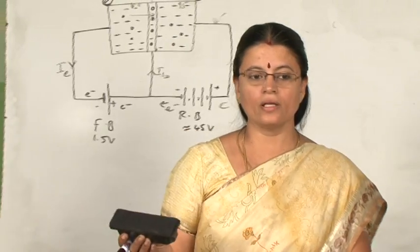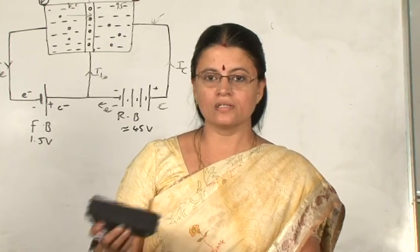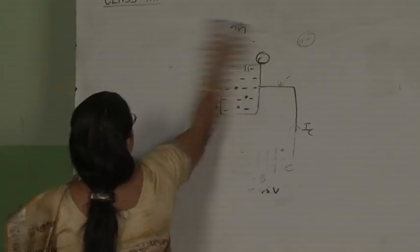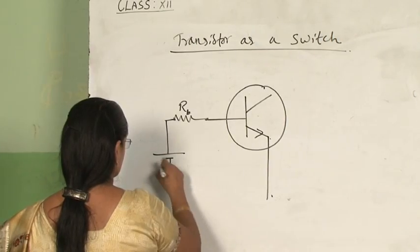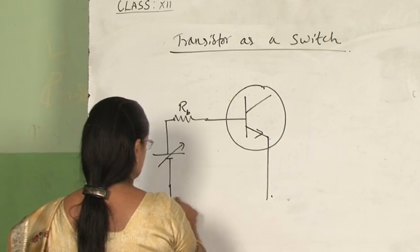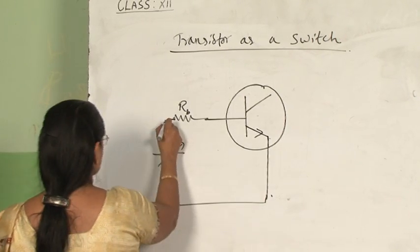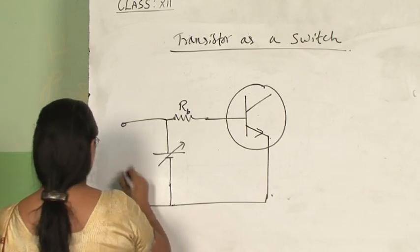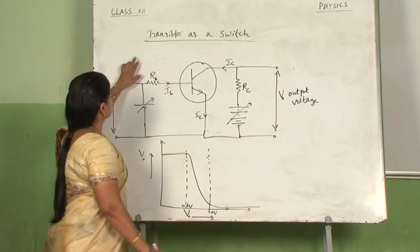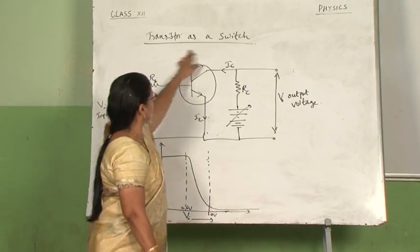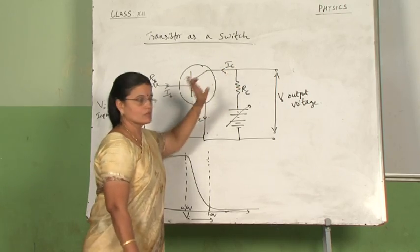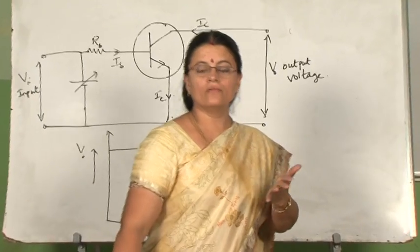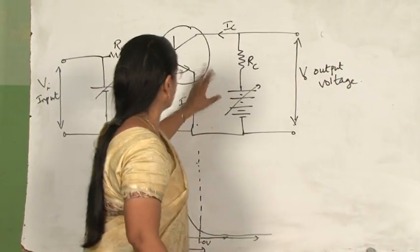In the same way we can explain the function of a PNP transistor — you can try that at home today. Now we will see how the transistor acts like a switch. A switch has an on-off position, and we will see how the transistor is used for that purpose.